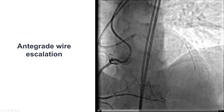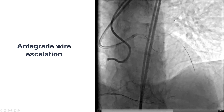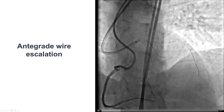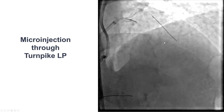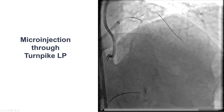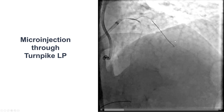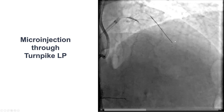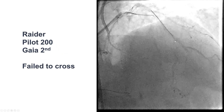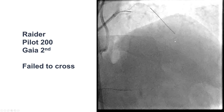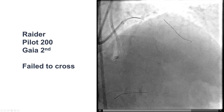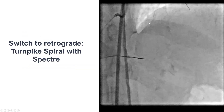IVUS confirmed the position of the proximal cap. We were able to advance a microcatheter and perform a small injection distal to the origin of the diagonal, which helped clarify the location of the vessel. We then did multiple wire attempts with polymer jacket wires and a Gaia Second, but unfortunately we could not advance past the area of occlusion.